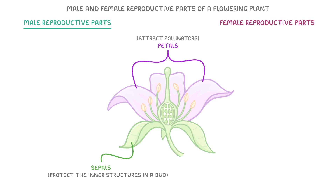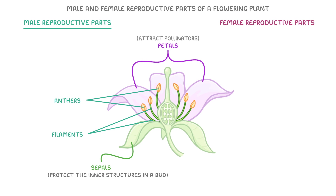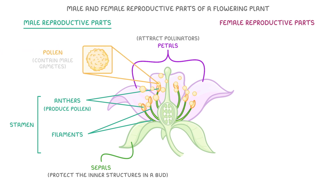Running through the male parts of a typical flower, these consist of two structures: anthers and filaments, which together are called the stamen. The anthers produce pollen — tiny grains that contain the male gametes. Filaments are the long stalks that support the anthers.